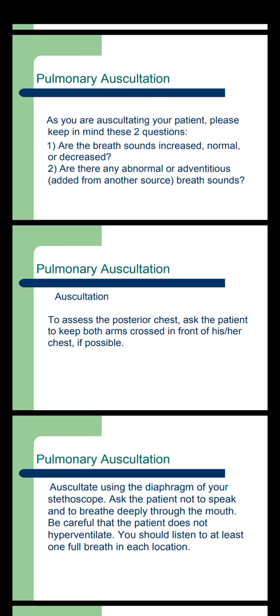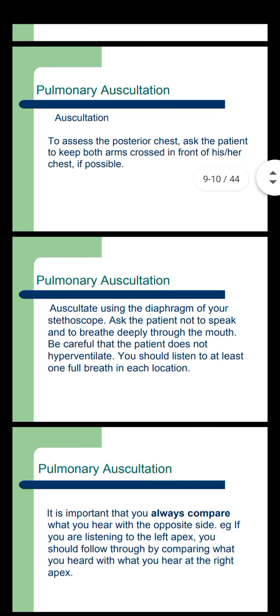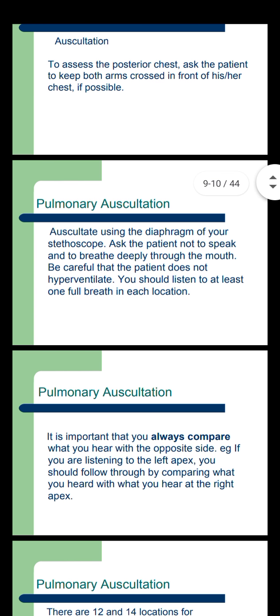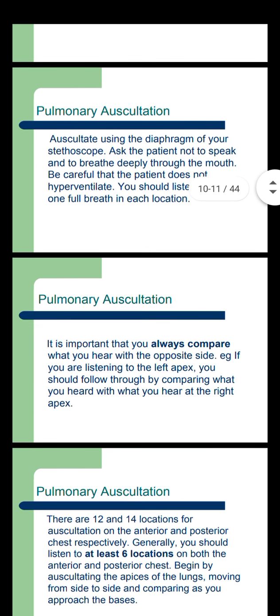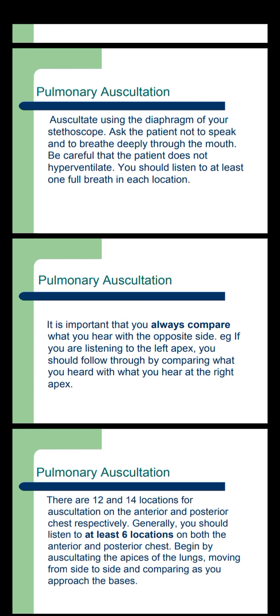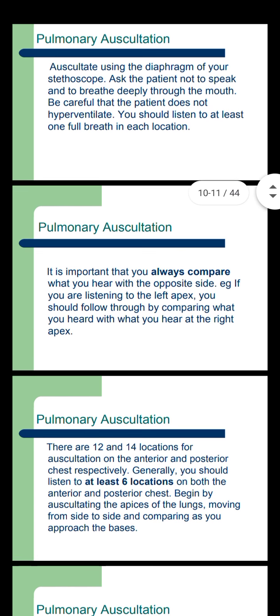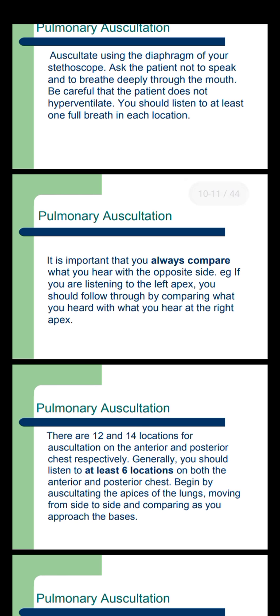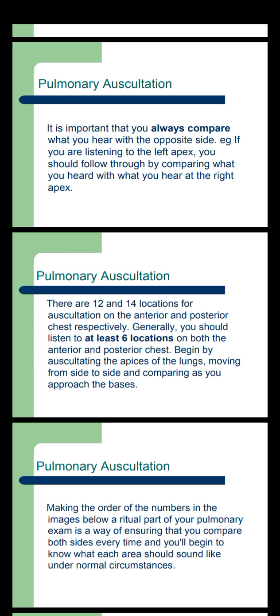Auscultation to assess the posterior chest: ask the patient to keep both arms crossed in front of his or her chest if possible. Using the diaphragm of your stethoscope, ask the patient not to speak and to breathe deeply through the mouth. Be careful that the patient does not hyperventilate. You should listen to at least one full breath in each location. It is important that you always compare what you hear with the opposite side — for example, if you are listening to the left apex, you should follow through by comparing what you hear with what you hear at the right apex.